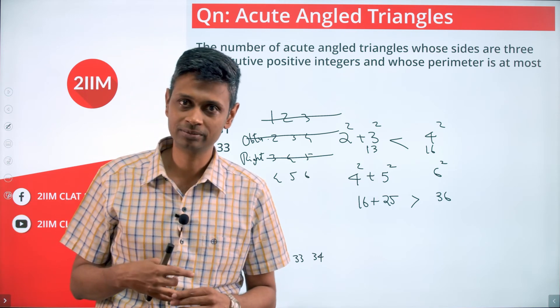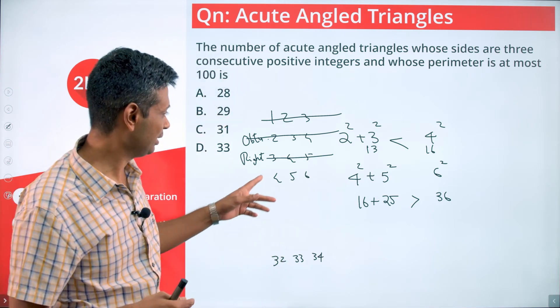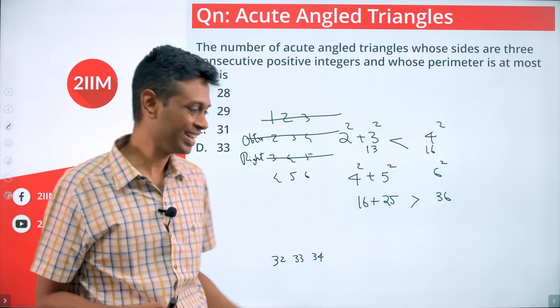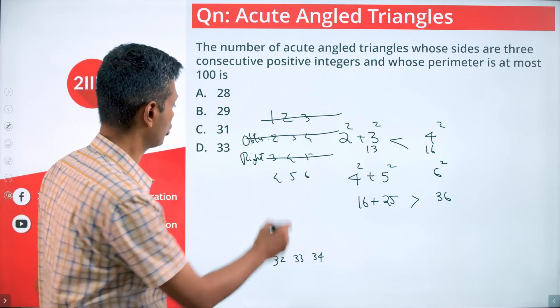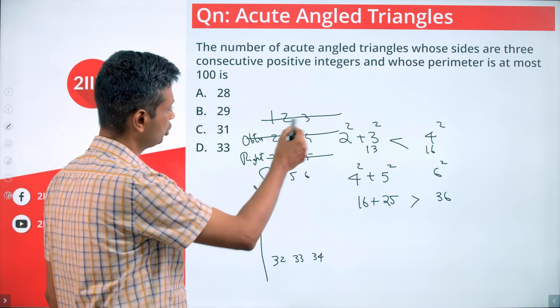If 4, 5, 6 satisfies this condition, everything else will satisfy this condition. We're effectively thinking about how many possible triangles are there: 1, 2, 3; 2, 3, 4; 3, 4, 5; all the way till 32, 33, 34.